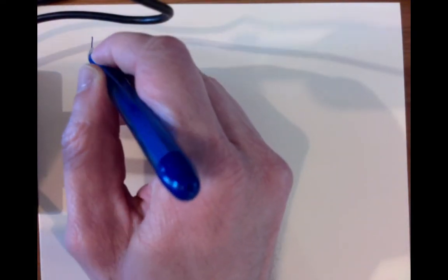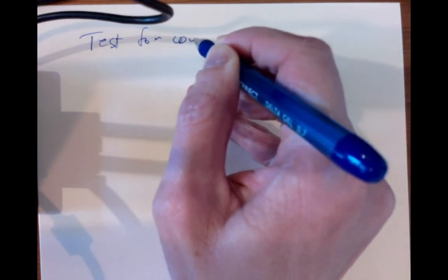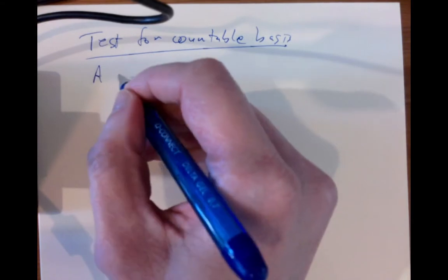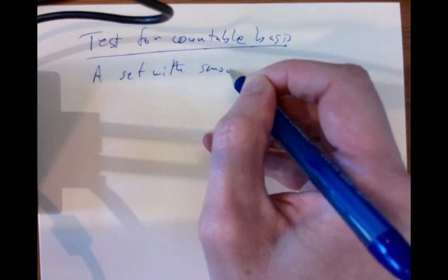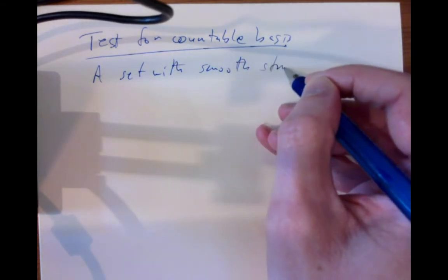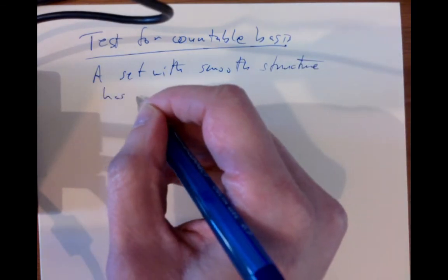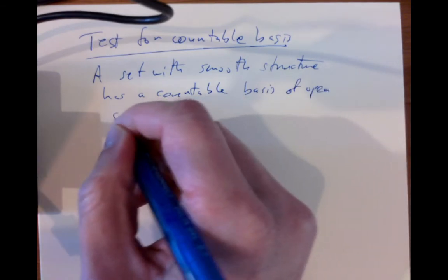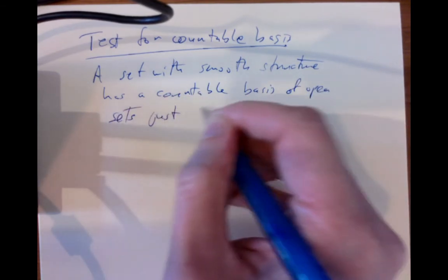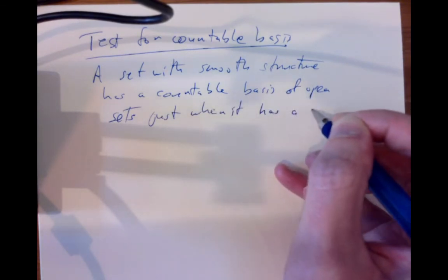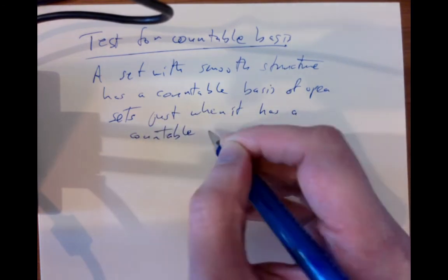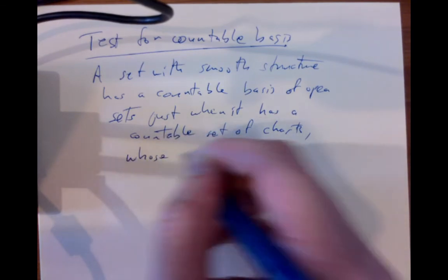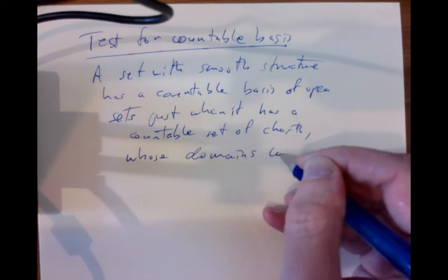So we have some simple tests. Test for a countable basis. A set with smooth structure has a countable basis of open sets for its topology just when it has a countable set of charts inside that smooth structure — so we can use a countable set to cover the set.